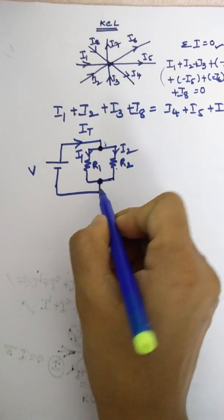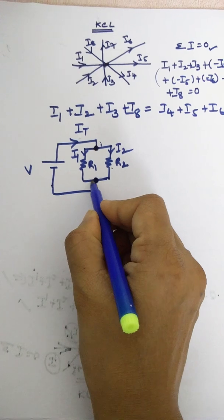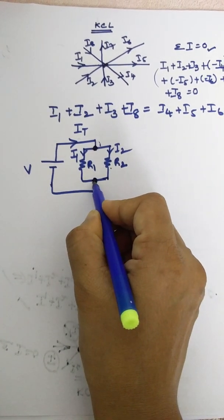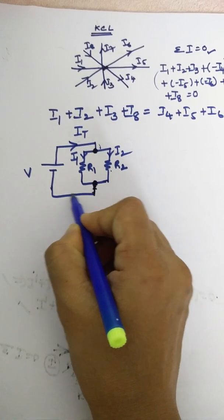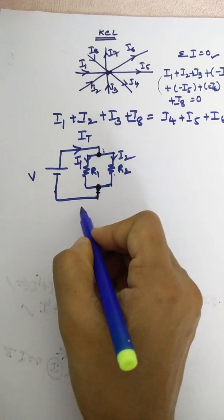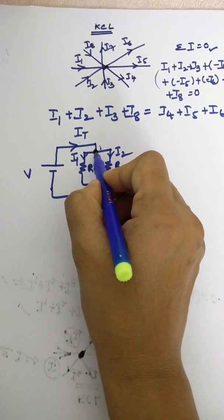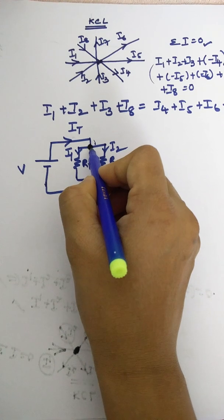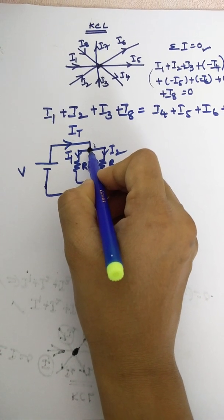So here also what is happening? This I1 is entering, this I2 is entering. Again, it is combined together and it is flowing in this way. So we follow the upper node. So now what is happening? We are applying KCL, we are trying to apply KCL.